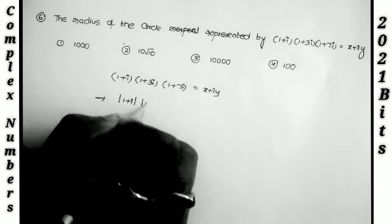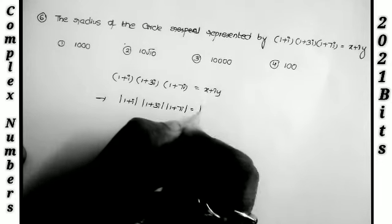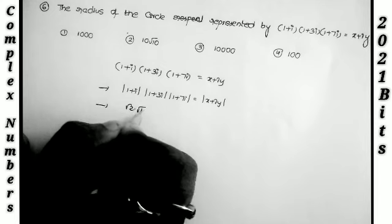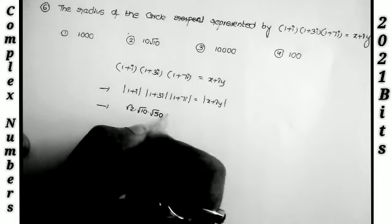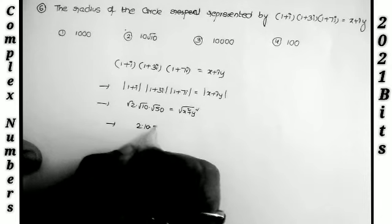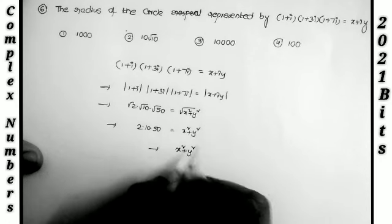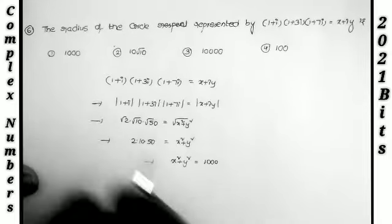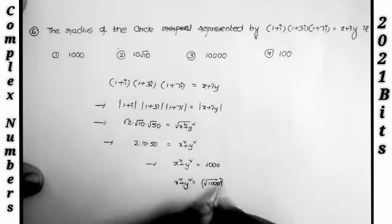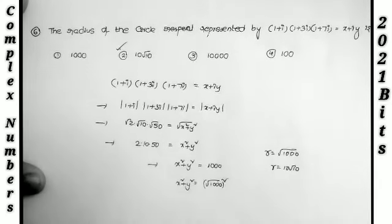Squaring both sides: 2 × 10 × 50 = x² + y², so x² + y² = 1000. This is a circle with equation x² + y² = (√1000)². The radius r = √1000 = 10√10. That is the second option.